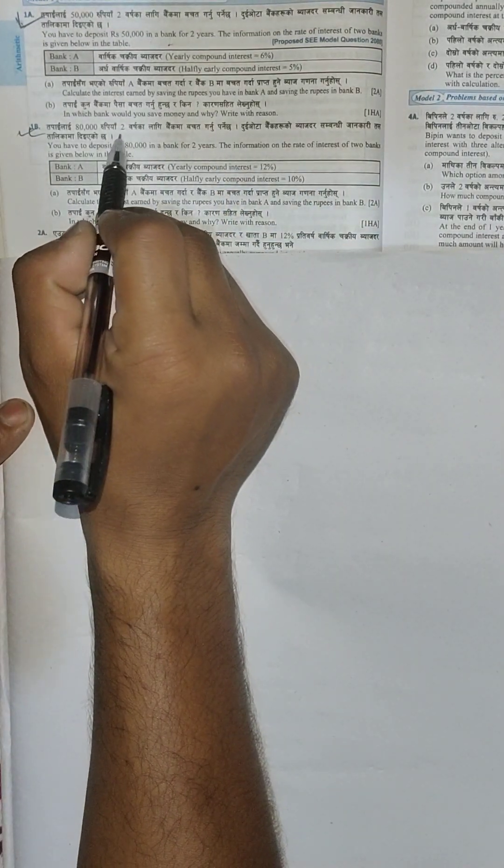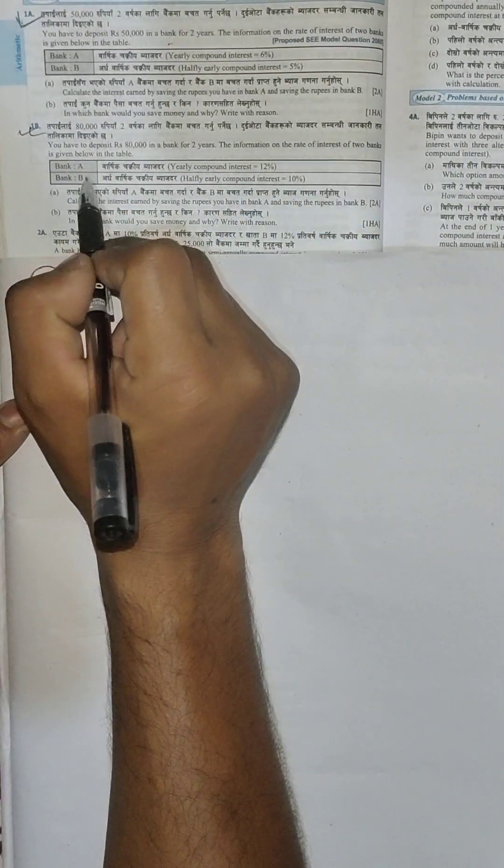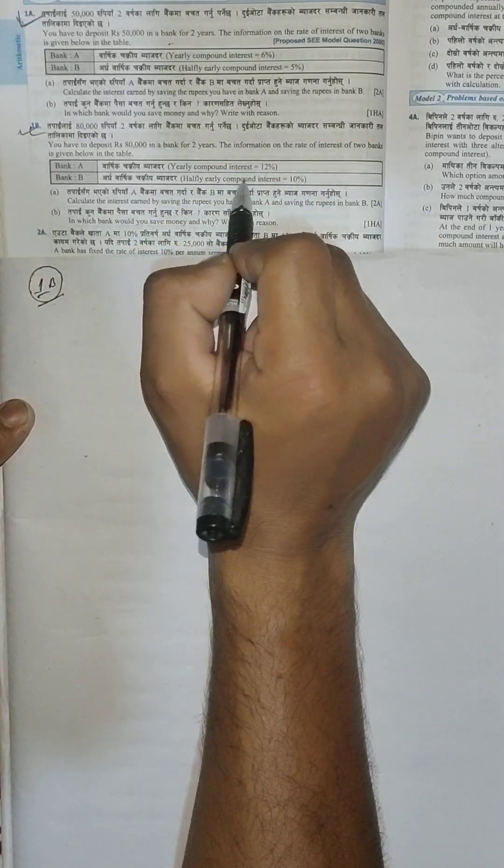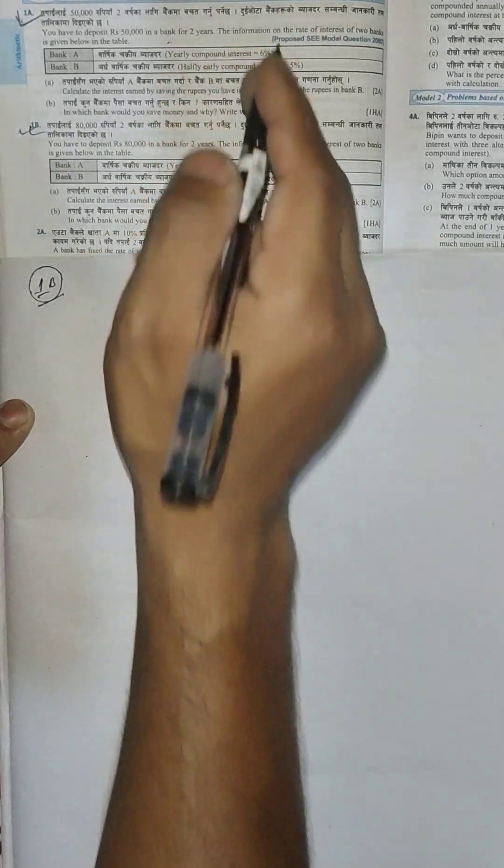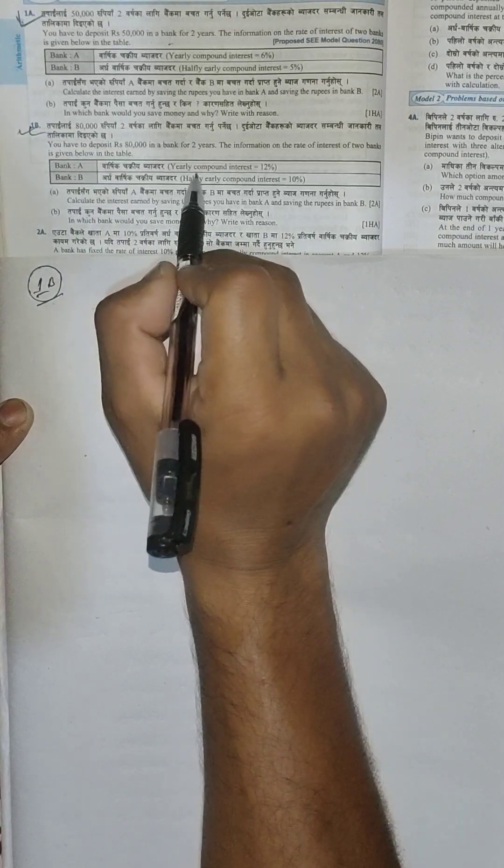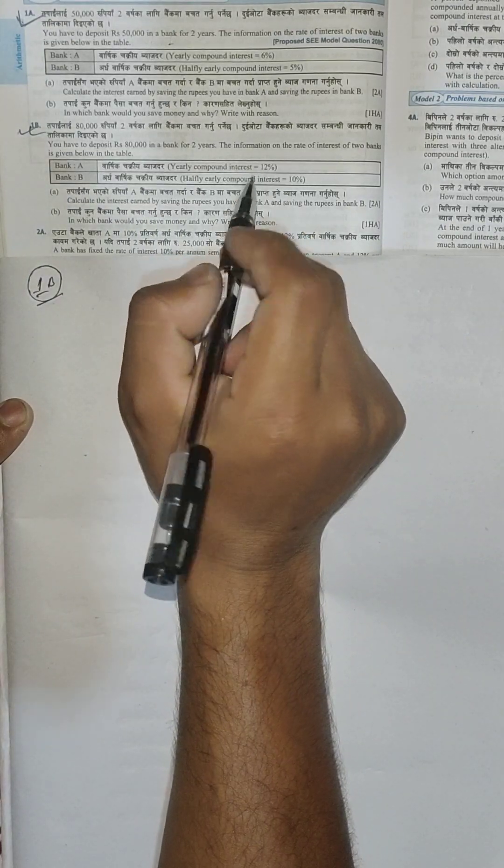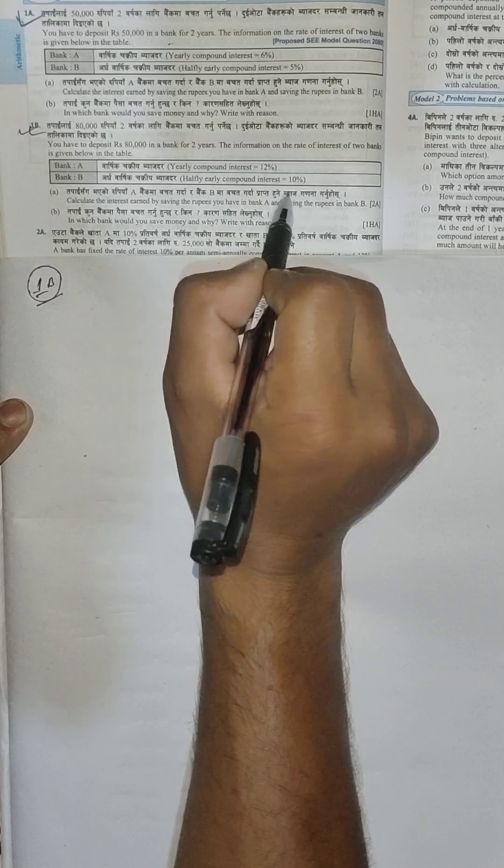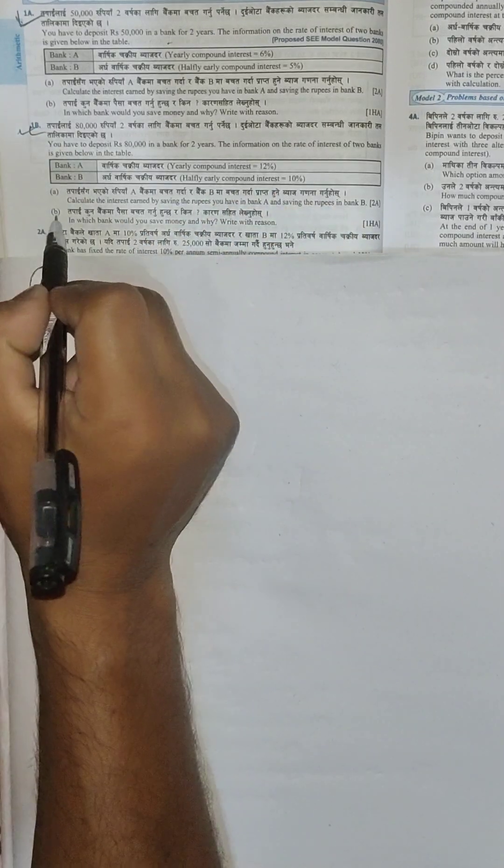Bank A offers yearly compound interest of 12%. Bank B offers half-yearly compound interest of 10%. This is the information given.